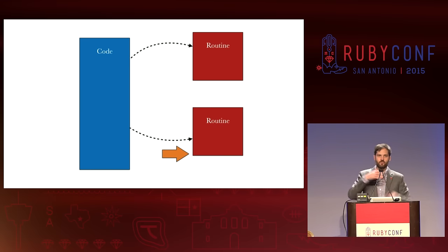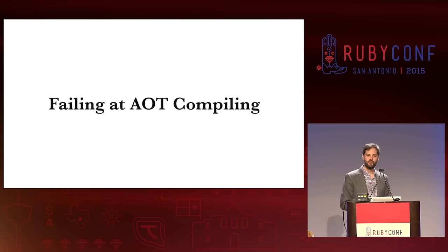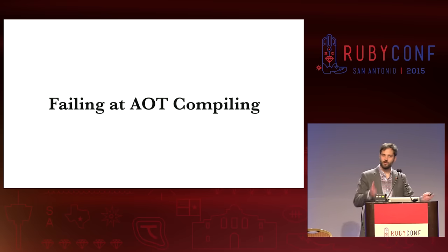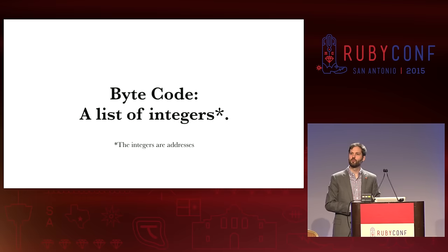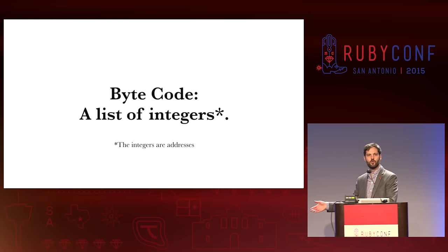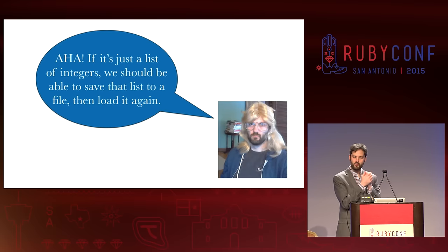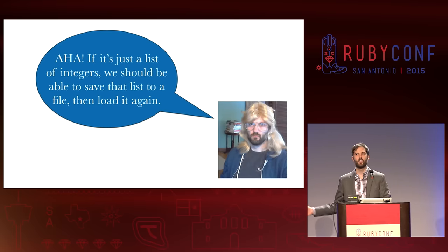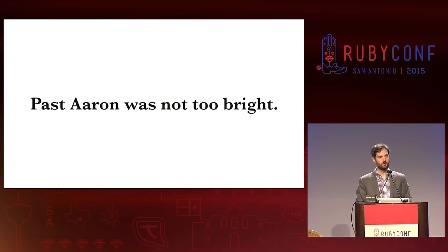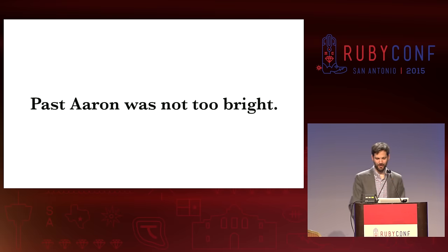We've gone on a tour of the VM internals. Let's talk about failing AOT compiling. As I was going through this, trying to put together an ahead of time compiler, I thought to myself: these bytecodes, it's just a list of integers. No problem. The integers are addresses — we'll just take that list, write it out to a file. Later on, we can read that file in and execute that list. Seems like a good plan, right? Well, unfortunately, past Aaron was not very bright — past Aaron was an idiot. But he's smarter now.